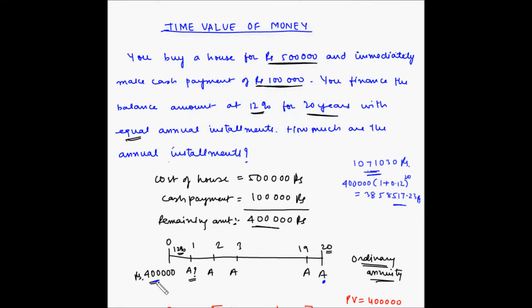So basically if you put 4 lakh rupees in a bank today which is giving you 12% interest per annum, at the end of 20 years you will have 38 lakhs 58,517 rupees.